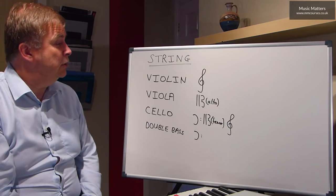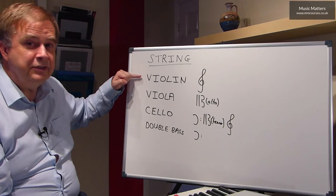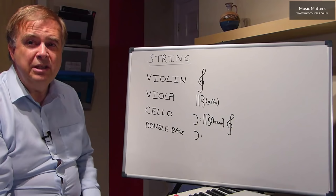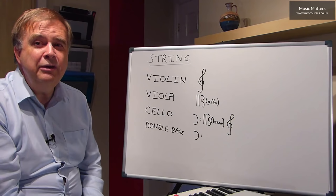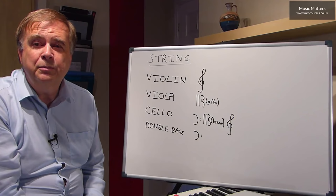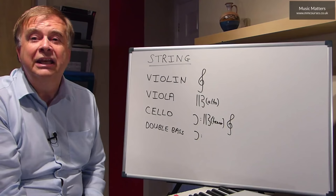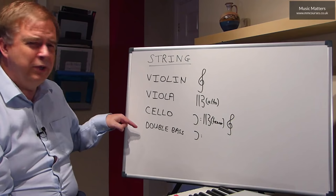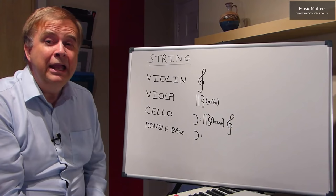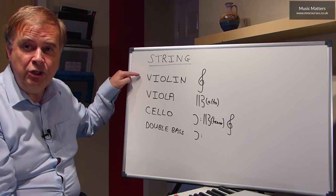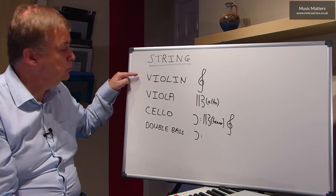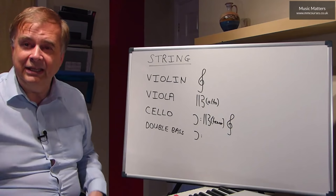So there is the standard string family: violins for the sopranos, violas for the altos, cellos for the tenors, double bass for the bass. One question that sometimes comes up on a theory paper is: which instruments do you expect to find in a standard string quartet? It's very tempting to think quartet equals four instruments — violin, viola, cello, double bass. Actually it's a slightly trick question, because in a string quartet we normally have violin one, violin two, viola, and cello. So that's the string quartet, and the standard instruments we expect to find in the orchestra.